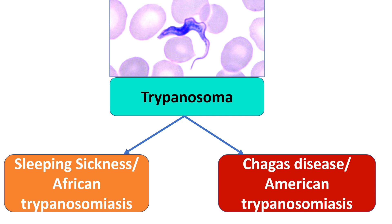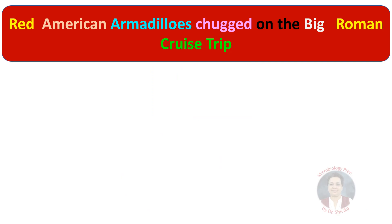First I'm going to give you a mnemonic to remember the important points regarding Chagas disease. The mnemonic goes like this: 'Red American armadillos chugged on the big Roman cruise trip.' For people wondering what 'chug' means — it means drinking beer rapidly. So: red American armadillos chugged on the big Roman cruise trip.